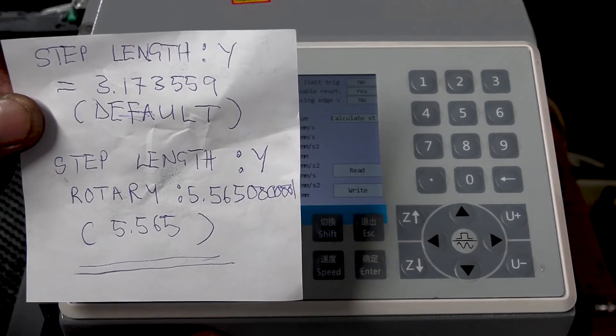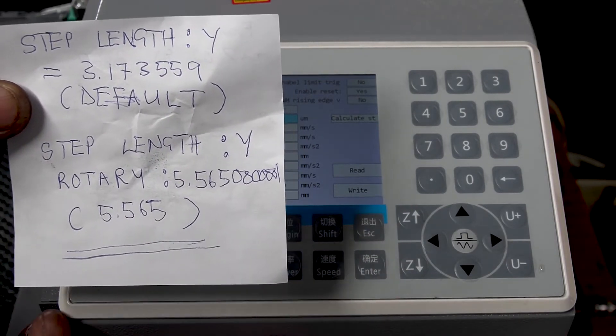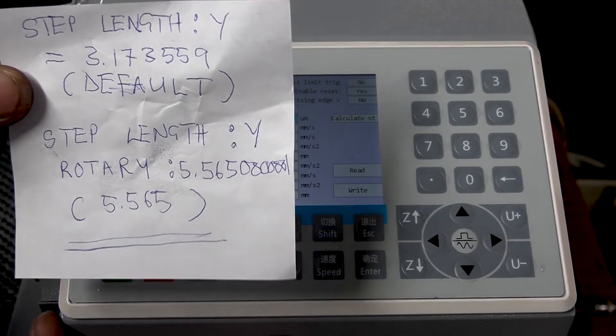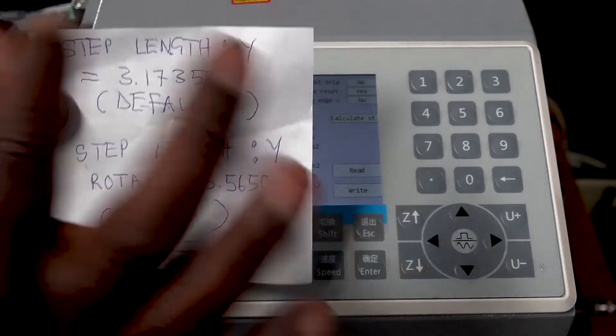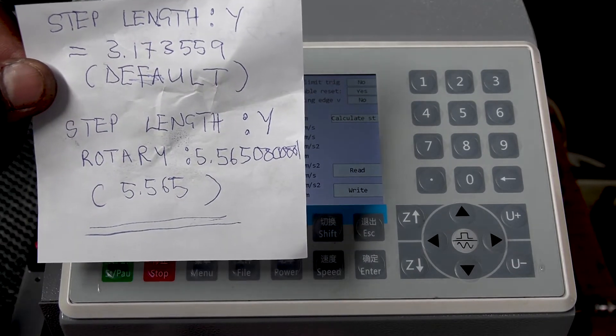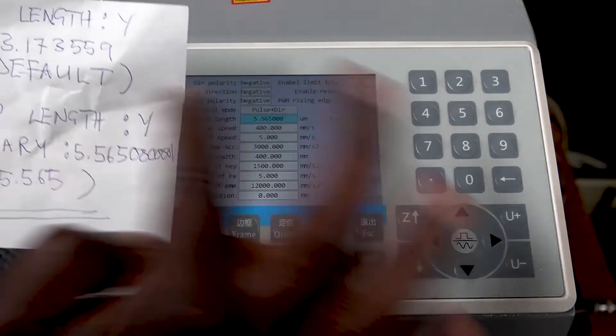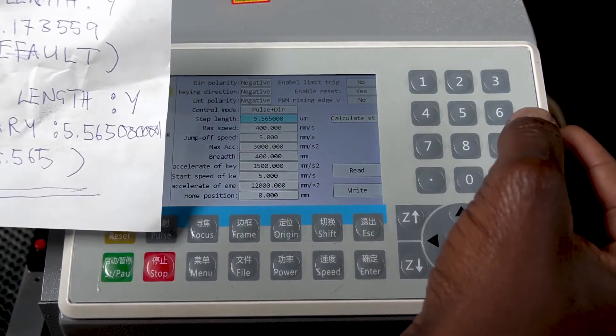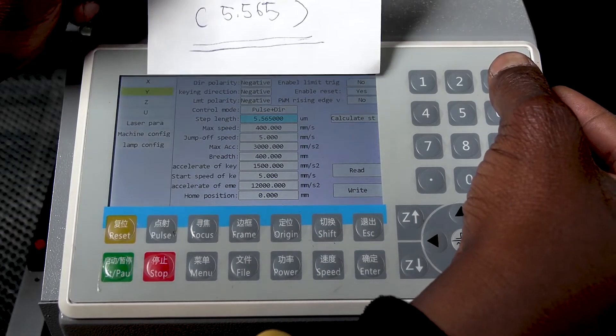Should you need to use the rotary, you enter the step length value for the rotary. Should you want to go back to normal mode, you need to put the default step length for Y. So I'm going to put back the default value for Y.